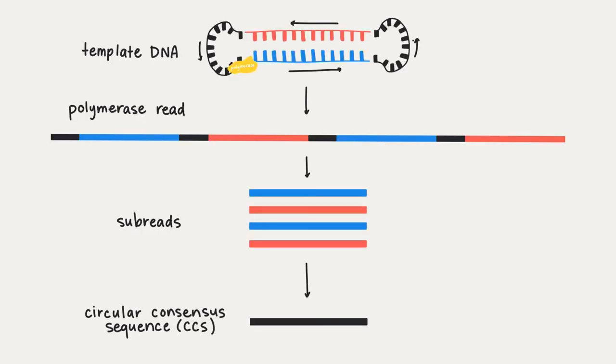For a short insert library, the circular structure of the DNA after we added the adapters results in the insert sequence being covered multiple times. The polymerase synthesizes one strand, then the adapter, then the next strand, then the other adapter, and around again.